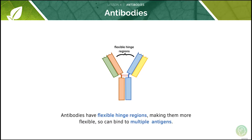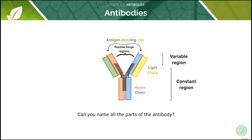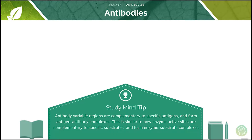Antibodies also have hinge regions which allow the Y branches to move away from each other. This makes the antibodies more flexible so they can bind to multiple antigens. Antibody variable regions are complementary to specific antigens and they form antigen-antibody complexes. This is similar to how enzyme active sites are complementary to specific substrates, forming enzyme-substrate complexes.